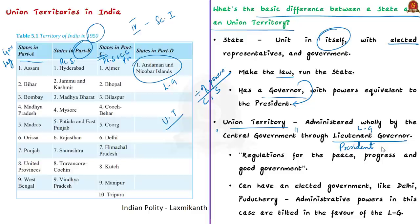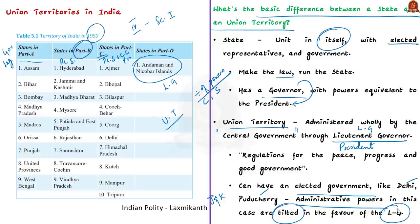A union territory can also have an elected government, like Puducherry, Delhi, and the most recent union territory of Jammu and Kashmir. But the administrative powers in this case are tilted in favour of the lieutenant governor, who is appointed by the president on the advice of the union government.